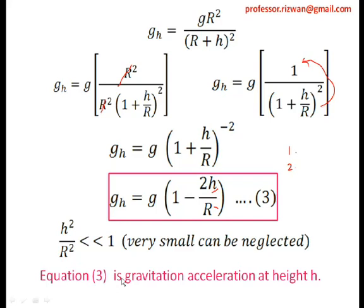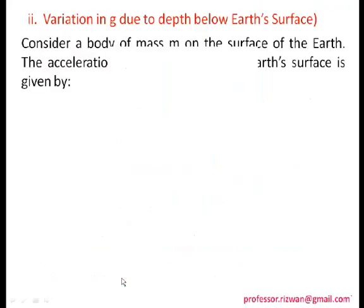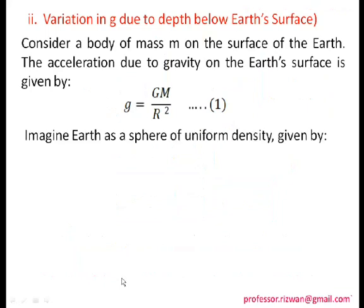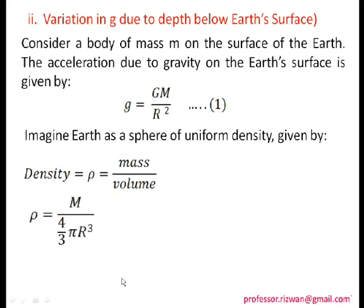Remember the formula g_h = g(1 − 2h/R); you will use it for solving many numericals. Now let us see variation in g due to depth below the earth's surface. Consider a body of mass m on the surface of the earth. Acceleration due to gravity at the surface is g = GM/R². We imagine earth as a sphere of uniform density rho, where rho = M / (4/3 · π·R³), giving M = (4/3)·π·R³·rho.